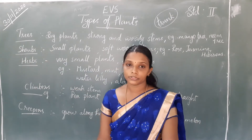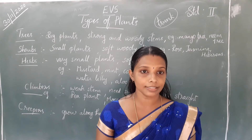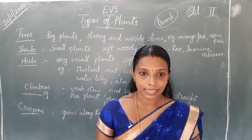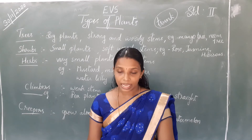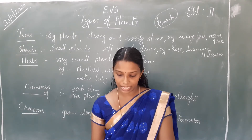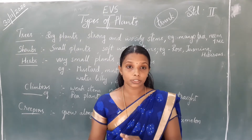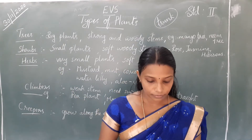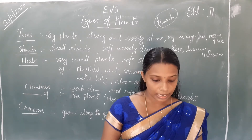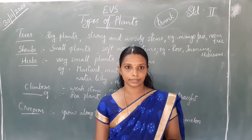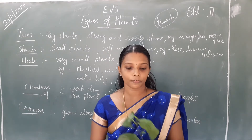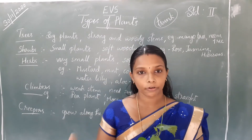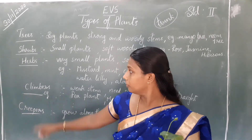Second type: shrubs. S-H-R-U-B-S. Shrubs are smaller plants than trees. Shrubs have small, thin, woody stems. Examples include cotton plant, rose plant, and hibiscus.